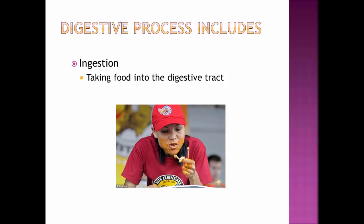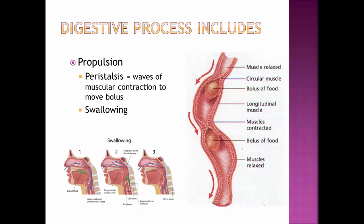Some of the digestive processes include ingestion — that is eating and taking in food. Then propulsion is another digestive process, with two possible ways we see it. Peristalsis consists of wave-like contractions that push food along. There's a bolus of food, and contractions behind it push it forward, continuing to wave on down, pushing the food through to other organs along the digestive tract. Swallowing is another process — a way to propel food from your mouth down into your esophagus and then your stomach.